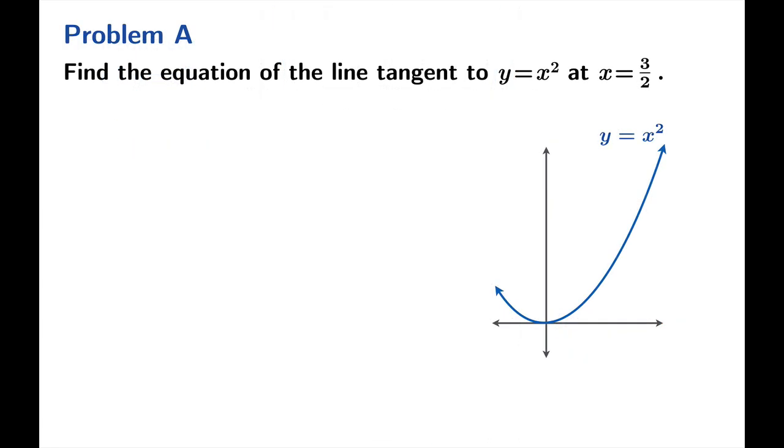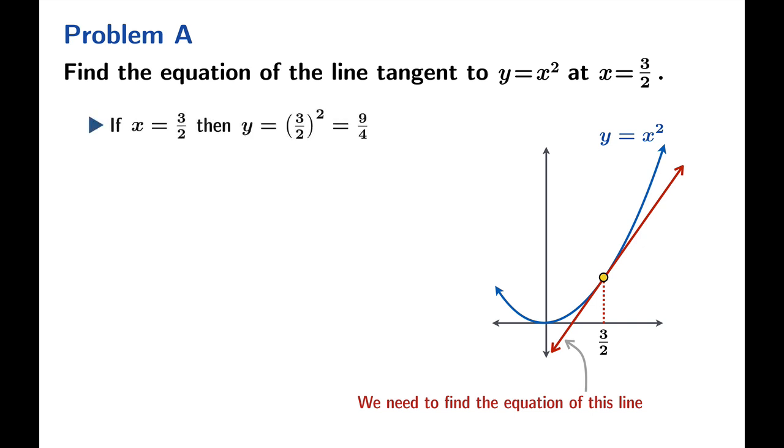So let's ask some more sophisticated questions. Let's first of all find the equation of the line tangent to y equals x squared at x equals 3 halves. So at 3 halves we have some tangent line and we want to find the equation of this line. We notice first of all that the function value is 9 quarters at x equals 3 halves. So one point on the line we're looking for is 3 halves comma 9 quarters.